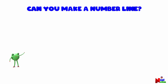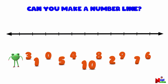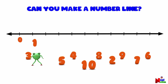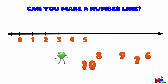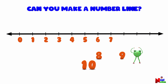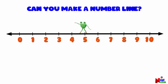Let's start with a straight line and then place numbers from 0 to 10. Let's begin with zero, then one, two, three, four, five, six, seven, eight, nine, and then ten. Hey, you did it — great job!